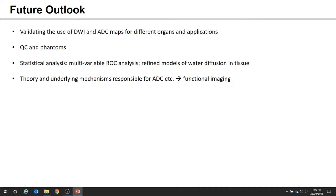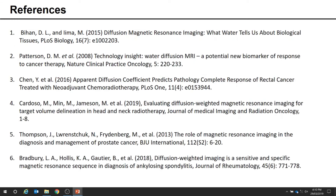We should consider multivariable ROC analysis to take into account all available information for higher sensitivity and specificity. Finally, the theory of water diffusion in different tissues is not well understood, and the underlying mechanisms causing ADC values to increase or decrease haven't been confirmed. If we truly want to do functional imaging, we need to understand and confirm what's happening at the molecular level — the biophysics and biochemistry that play into the signals that get measured. There's a lot of work being done in this area, but there's still a lot to do.